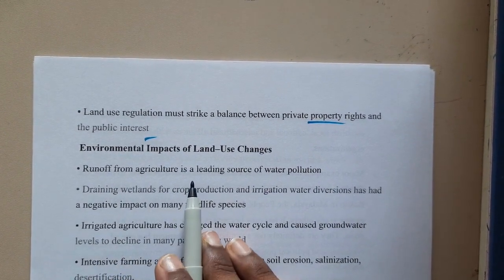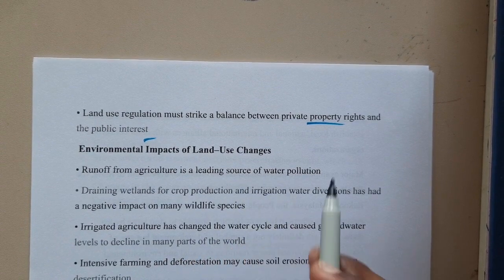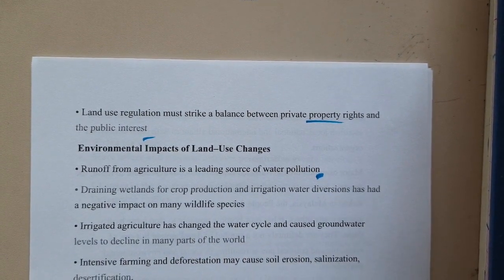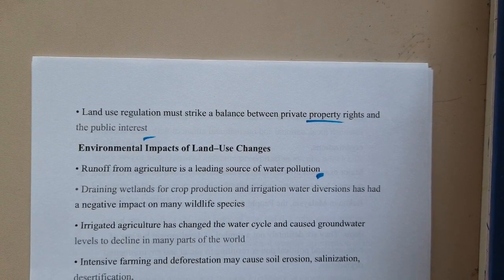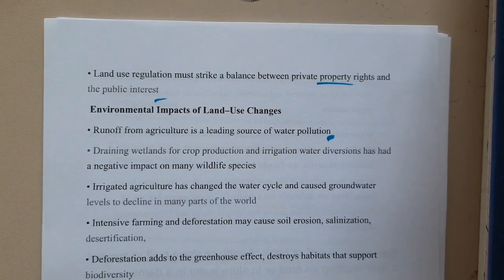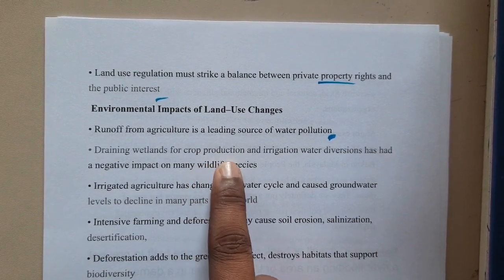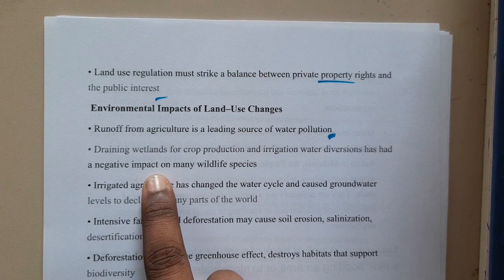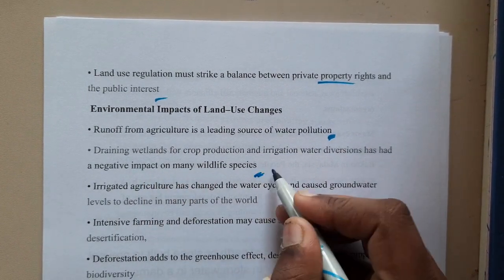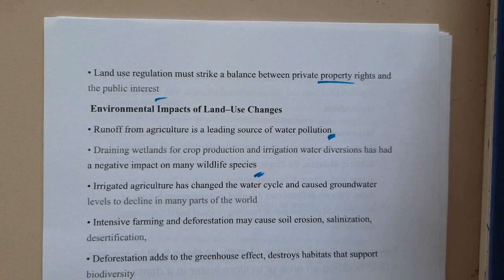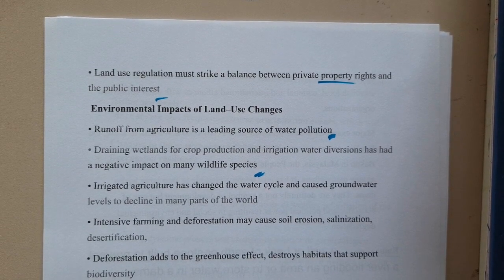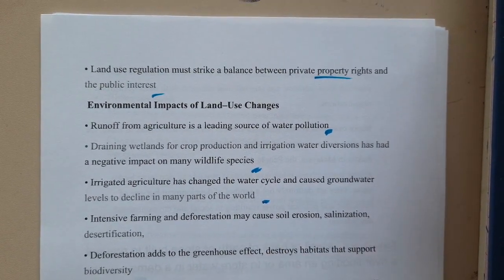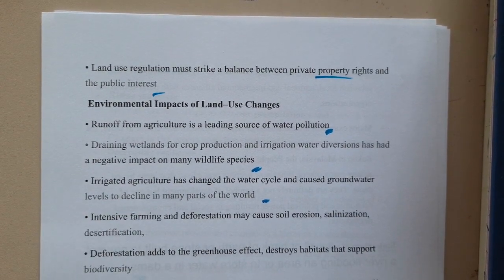Regarding the environmental impact of land use changes — runoff from agriculture is a leading source of water pollution. If water coming out of agricultural lands becomes stagnant, it indirectly causes water pollution. Draining wetlands for crop production and irrigation water diversion has had a negative impact on many wild species, including earthworms and other organisms living in soil and water.